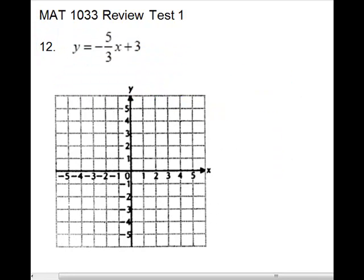Problem 12 asks us to graph. This is a linear equation. It is in slope-intercept form, which means the y is isolated. You can pick off the slope, which is your coefficient of the x, a negative 5 thirds, and your y-intercept will be the 3. So our m, we have to put the negative on the top or the bottom to move with it. So I'll put it on the numerator. And my y-intercept is 0, 3.